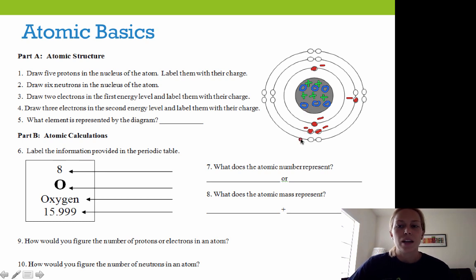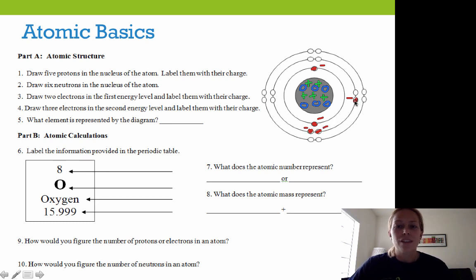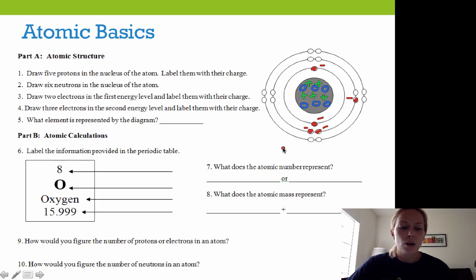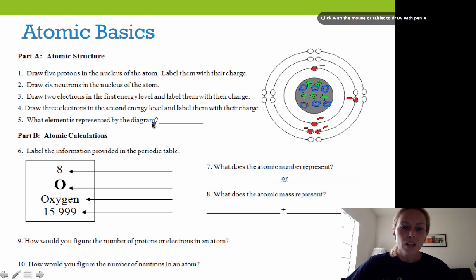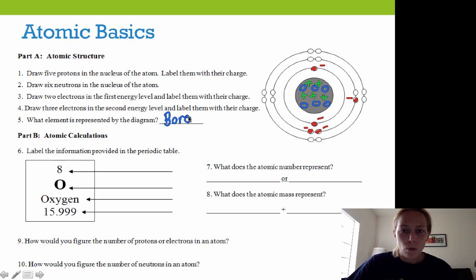It says: what element is represented by the diagram? We have five protons, and we have one, two, three valence electrons. You should know about valence electrons — we have three valence electrons. So if we look at our periodic table, we will find that the element we just drew is called boron.